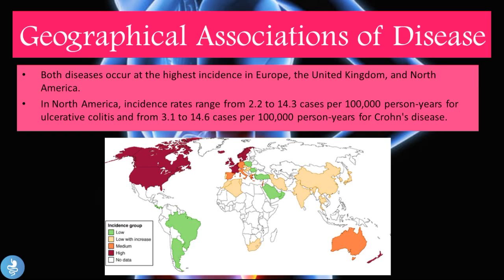The geographical associations of the disease: both diseases occur at highest incidence in Europe, the United Kingdom, and North America. In North America, incidence rates range from 2.2 to 14.3 cases per 100,000 persons per year for ulcerative colitis, and 3.1 to 14.6 cases per 100,000 persons per year for Crohn's disease. The geographical map shows the highest incidence clearly in North America and parts of Europe and the United Kingdom.